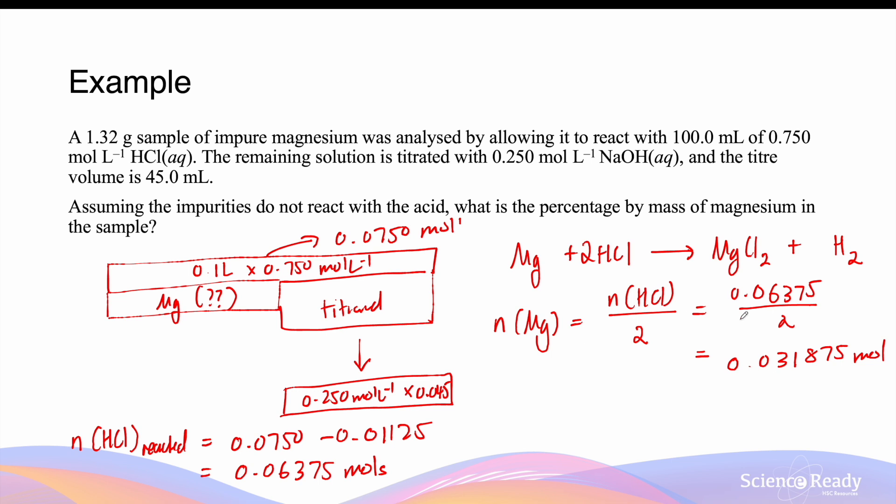Because we want to assess the percentage by mass, we want to convert the number of moles of magnesium into mass by multiplying by its molar mass, which is 24.31. This gives me a mass of 0.775 grams. The percentage by mass will then be equal to 0.775 divided by the mass of the sample of impure magnesium, which is 1.32 grams, times by 100, and that is 58.7%. We'll leave this as three significant figures.